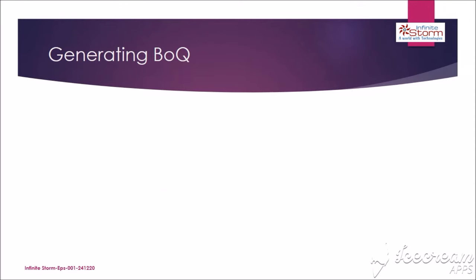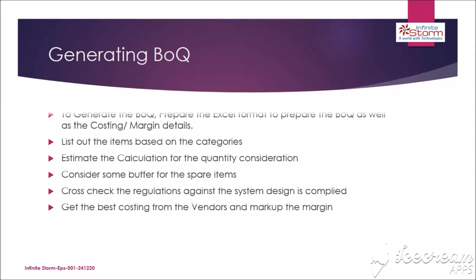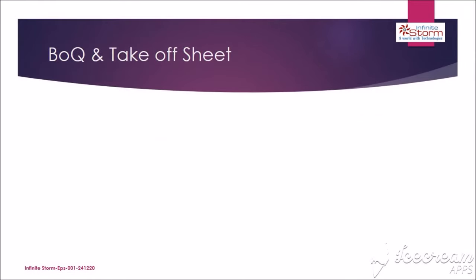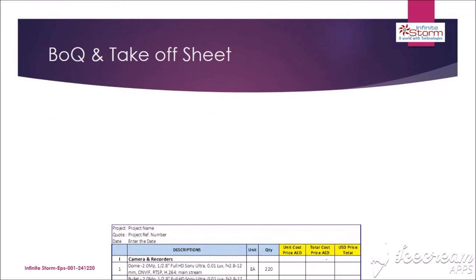To generate the BOQ, prepare an Excel format for the bill of quantities as well as costing and margin details. List out the items based on categories, estimate the calculation for quantity consideration, and consider some buffer for spare items. Cross-check the regulations to confirm the system design is compliant, then get the best costing from vendors and mark up the margin.